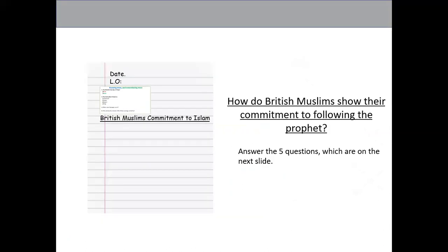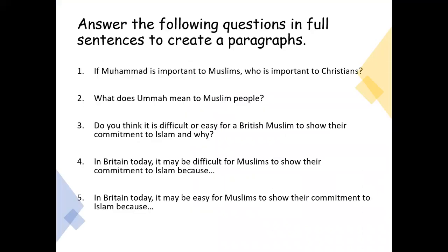Now we have another activity: how do British Muslims show their commitment to following the prophet? There are five questions on the next slide, and you need to answer them in full sentences on your piece of paper. The questions are: number one, if Muhammad is important to Muslims, who is important to Christians? Number two, what does ummah mean to Muslim people? Number three, do you think it is difficult or easy for a British Muslim to show their commitment to Islam and why? Please give a reason to justify your answer — you can't just say yes or no.